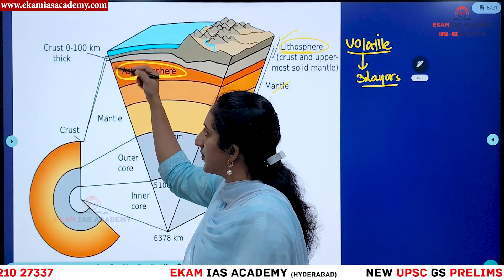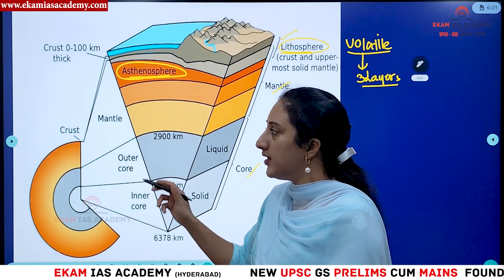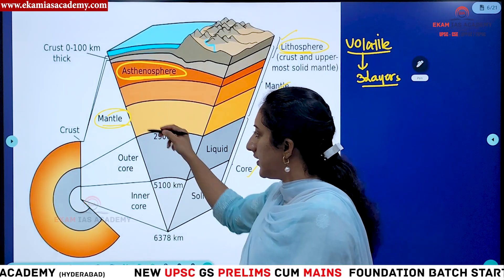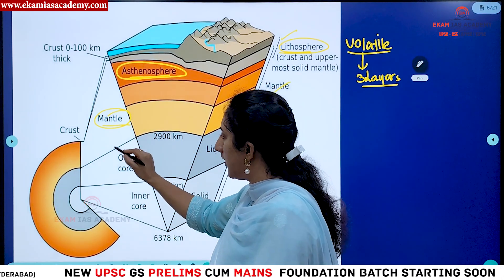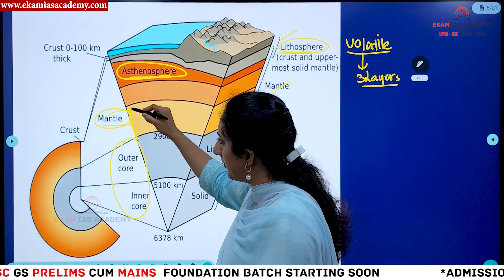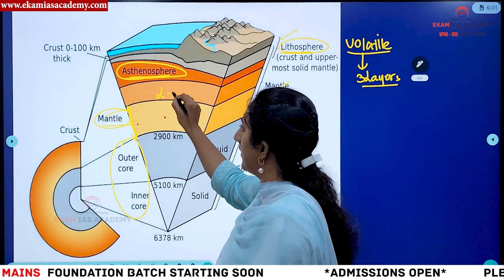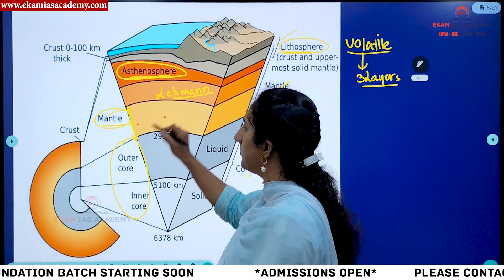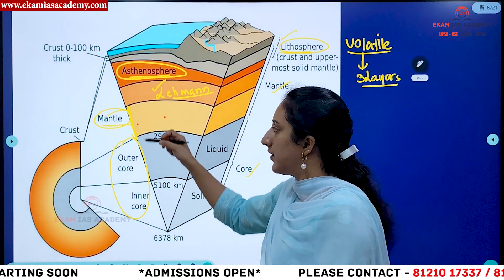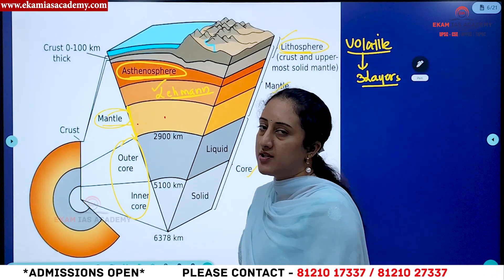As you proceed deeper into the interior of the earth, temperature and pressure increase. After the crust we have the mantle, which is comparatively denser. Going deeper still, we reach the innermost layer — the core. There is a zone of discontinuity between the mantle and core called the Lehmann discontinuity, named after the person who first identified the core of the earth. At this boundary we observe differences in temperature, pressure, and density.